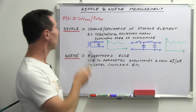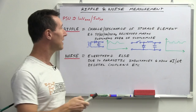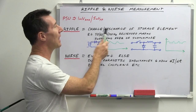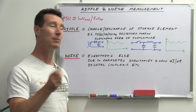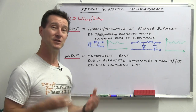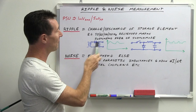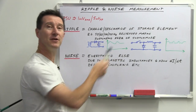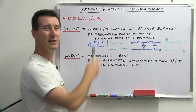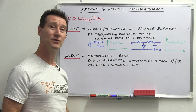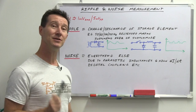So what does ripple mean? It can be correctly described as the charge-discharge cycle of the storage element in whatever power supply you're using, be it linear or switch mode. People think ripple only means 50 or 60 Hz mains hum from a traditional linear supply. With a half-wave bridge rectifier and capacitor, you'll get that 50/60 Hz ripple. With a full-wave bridge rectifier, you'll get double that frequency.